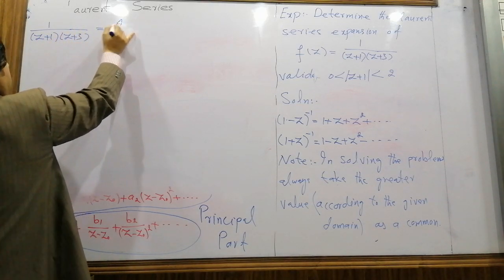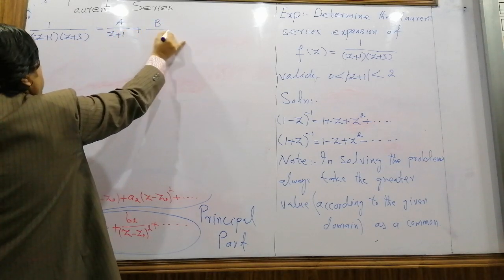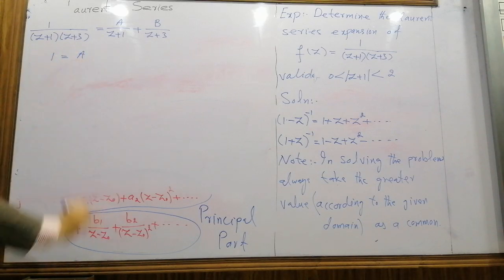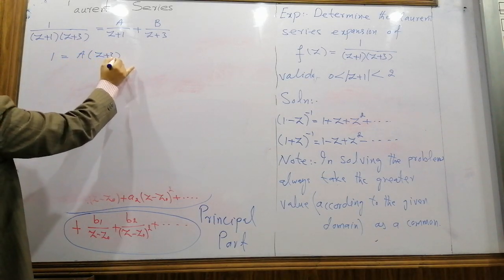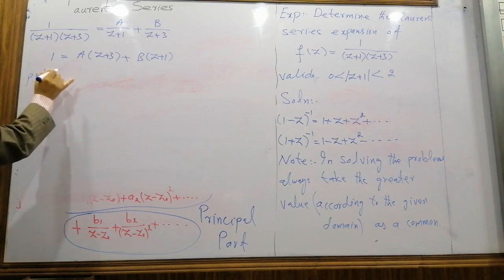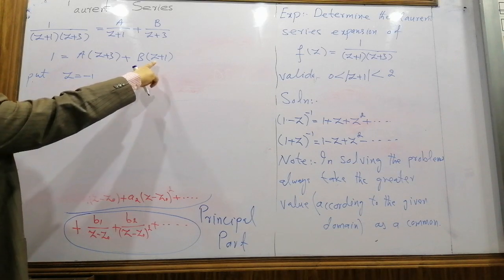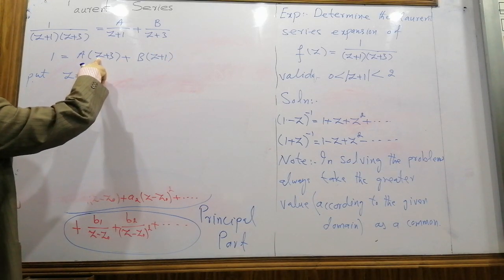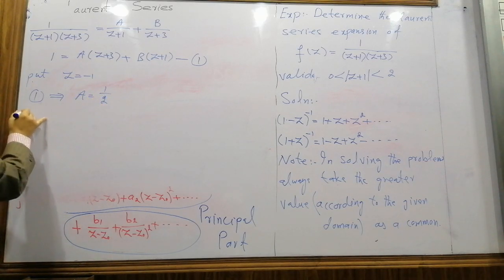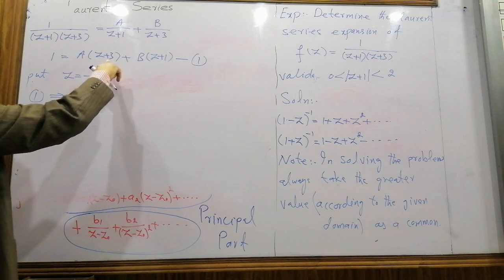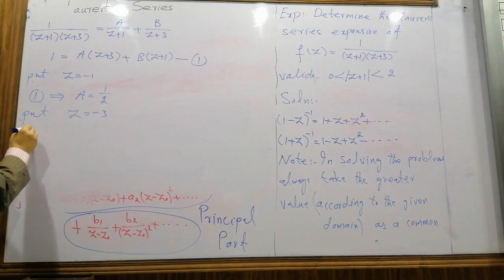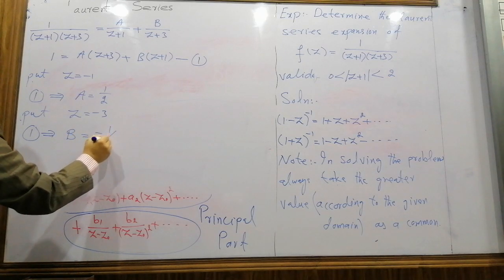By partial fractions: 1/[(z+1)(z+3)] = A/(z+1) + B/(z+3). Multiplying by the LCM gives 1 = A(z+3) + B(z+1). Putting z = −1, the B term vanishes and we obtain A = 1/2. Putting z = −3, the A term vanishes; since −3+1 = −2, we obtain B = −1/2.